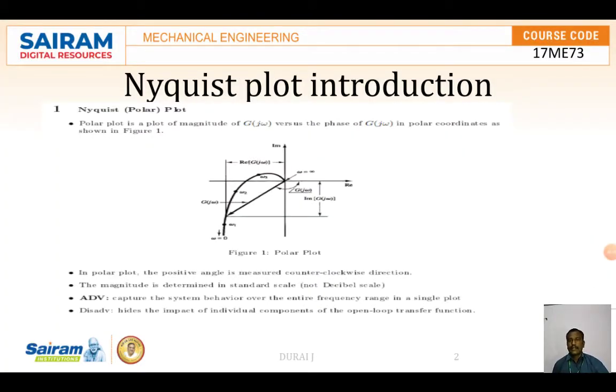The Nyquist plot - here the polar plot is the plot of magnitude of G(jω) versus phase of G(jω) in polar coordinates as shown in the figure. Normally the thing, it comes over horizontal and vertical line. From here to the curve, it should come over here.